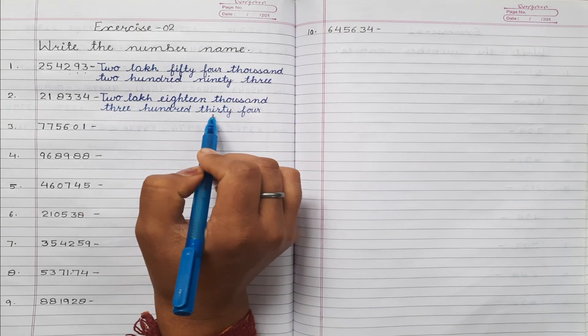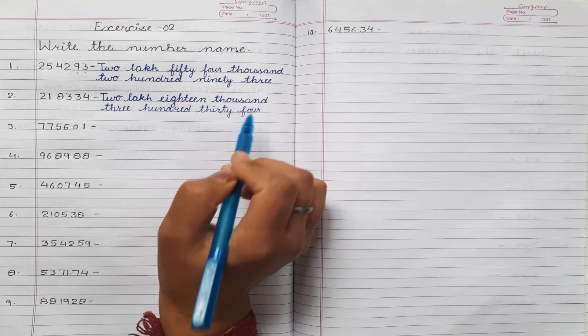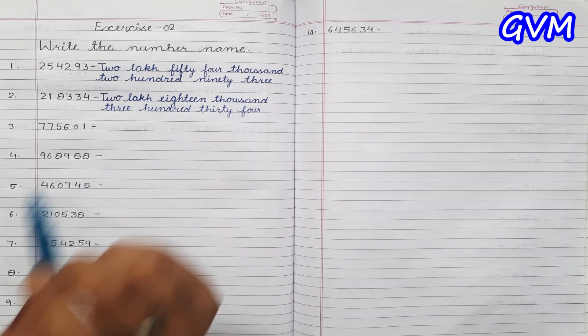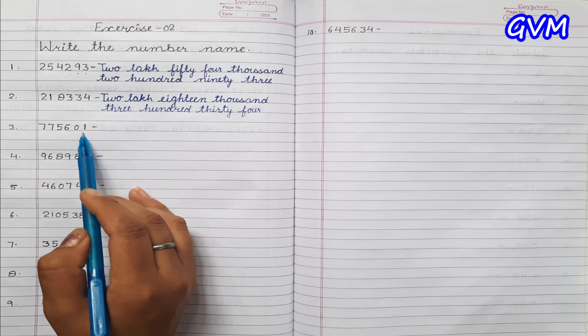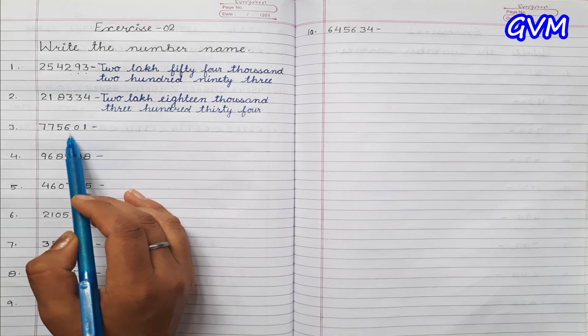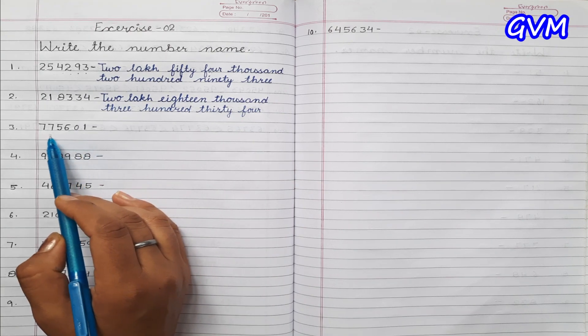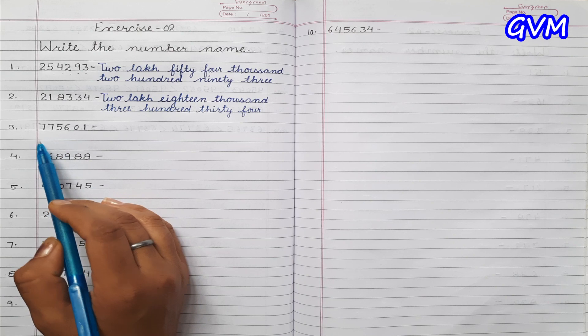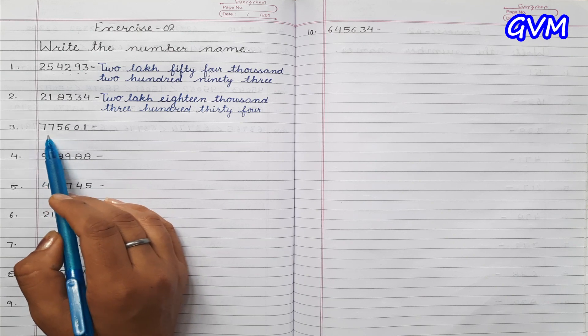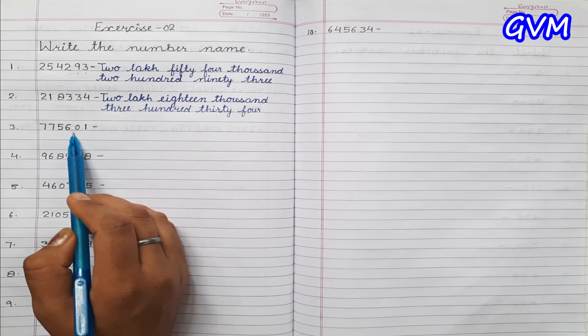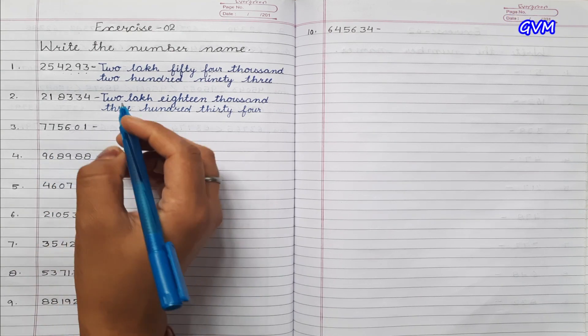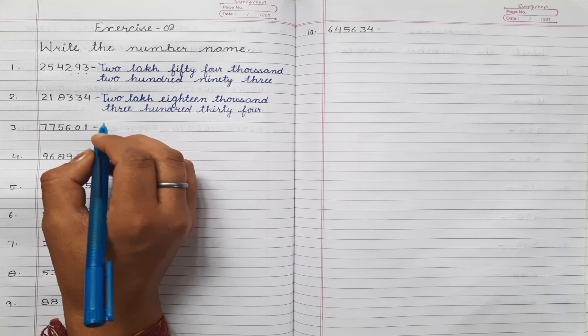Next number is: ones, tens, hundred, thousand, ten thousand, lakh. The number is 7,75,601. Word form here.